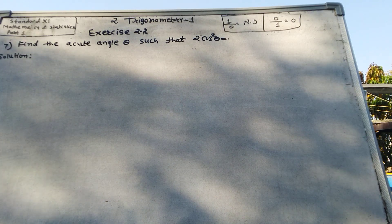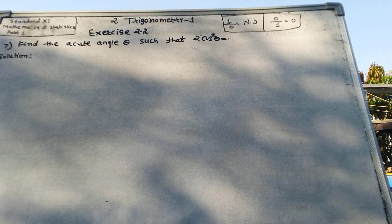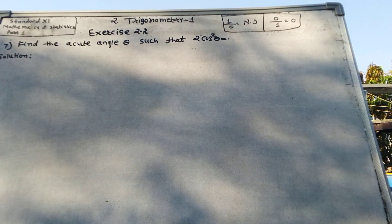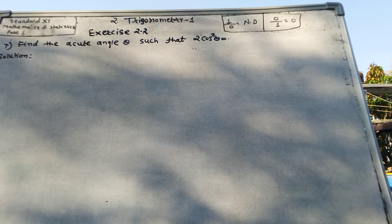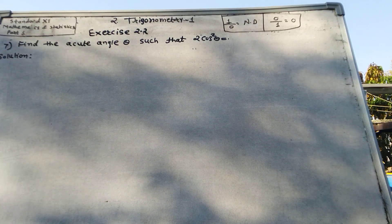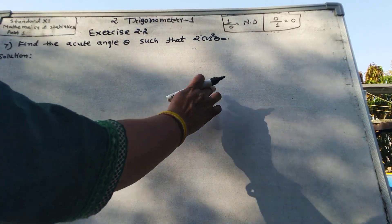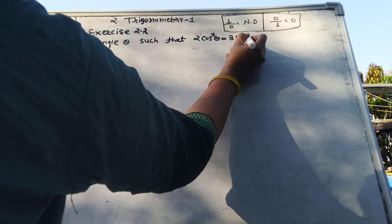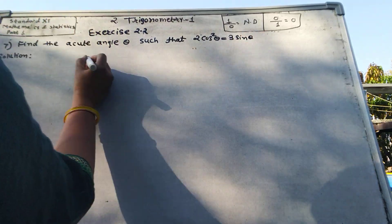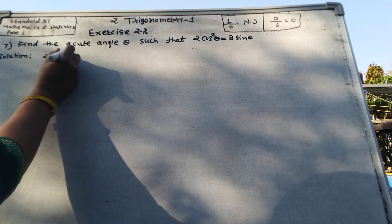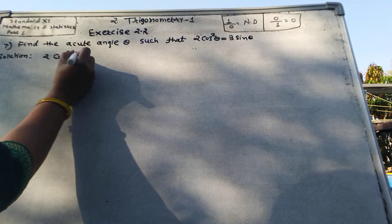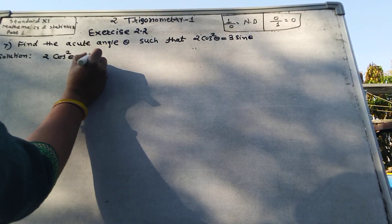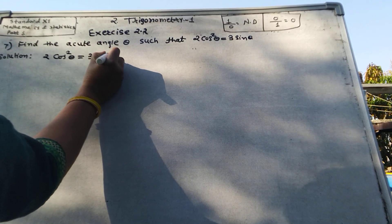Question 7. Find the accurate angle theta such that 2 cos squared theta equals 3 sin theta.